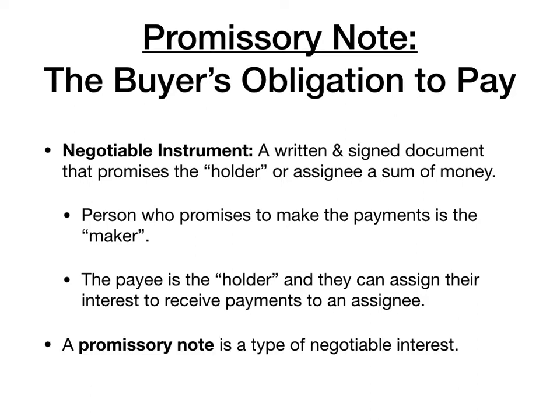A promissory note is a type of negotiable instrument. There are other types of negotiable instruments. You may be familiar with checks — those are negotiable instruments as well.